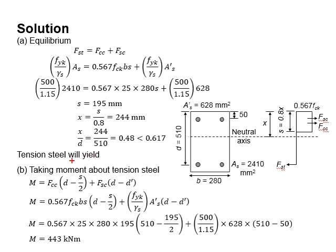Next, you need to determine the moment about the tension steel. It is calculated by multiplying Fcc with the lever arm here and Fsc with the lever arm here. The lever arm for the Fcc is determined by subtracting D with half of the height of the stress plot.